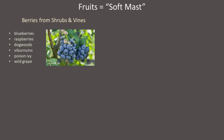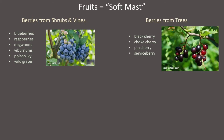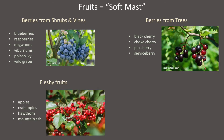Soft mast includes berries produced on shrubs and vines, including blueberries, raspberries, and fruits of dogwoods and viburnums. Berries produced on trees, such as those produced by cherry trees and serviceberries that grow as trees. And fleshy fruits, such as those produced by apples, crab apples, and hawthorns.